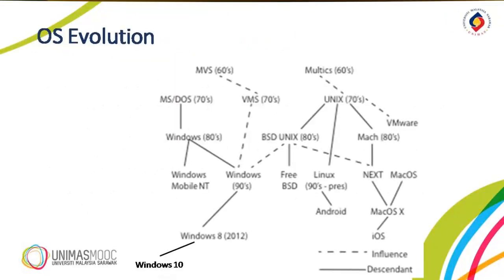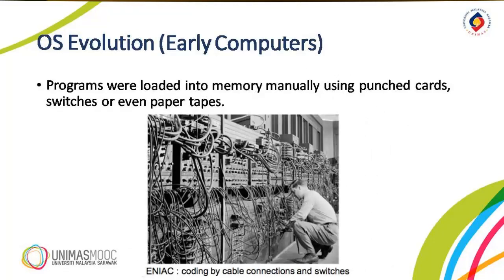Let's have a look at the OS evolution. The diagram in this slide shows the evolution of Windows and Unix operating systems from the beginning until the current versions. This slide shows the OS evolution at the early computer era. Programs were loaded into memory manually using punch cards, switches, or even paper tapes.